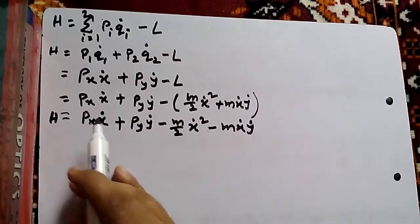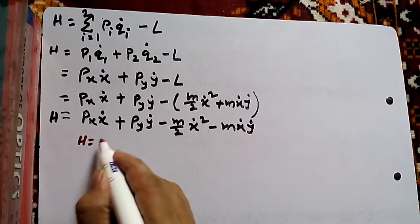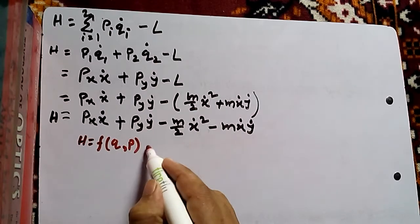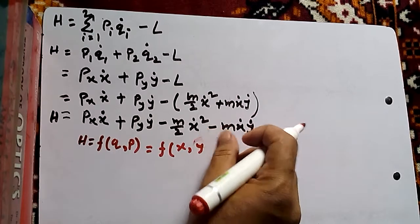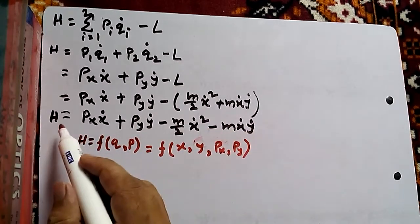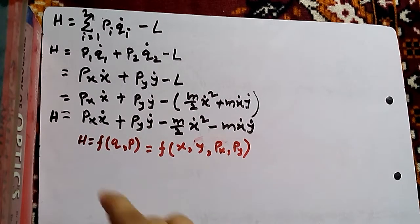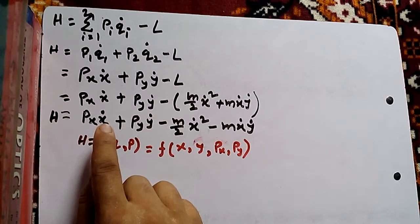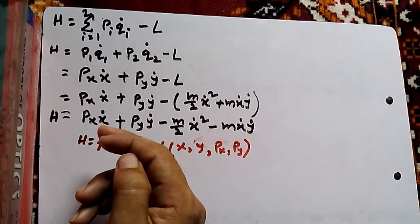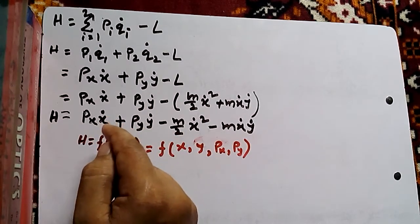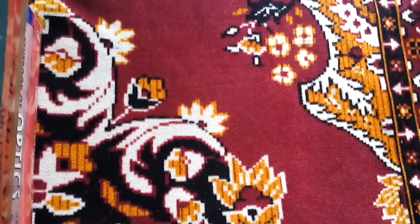This is the Hamiltonian we got, but this is not the final answer because the Hamiltonian must always be a function of position and momentum only. In two dimensions it is a function of X, Y, Px, and Py. Here the Hamiltonian still contains X-dot and Y-dot, which are not allowed. So we need to find X-dot and Y-dot in terms of X, Y, Px, Py and substitute their values.